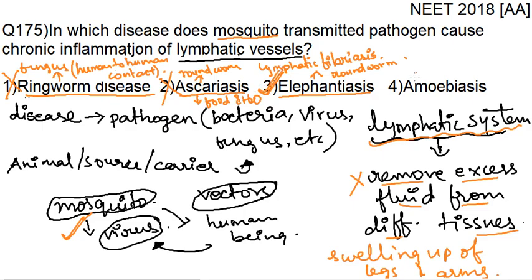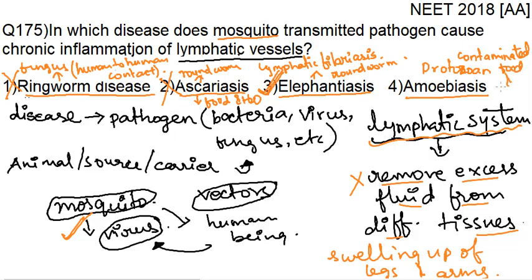So the third option is the correct option. The fourth option, amoebiasis, is caused due to a protozoan and spreads due to consumption of contaminated food and water. Our clear answer is option number three, that is elephantiasis. Thank you.